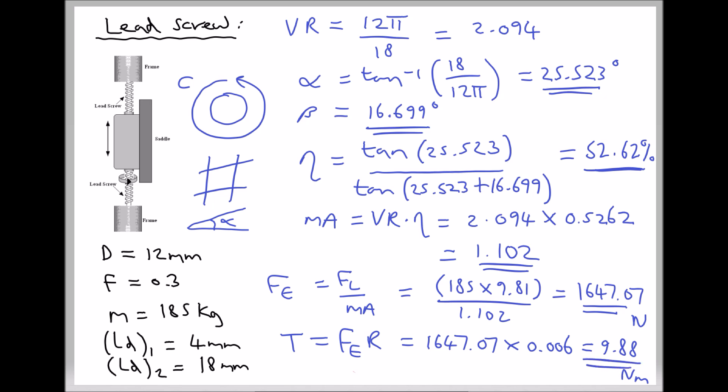Even though our efficiency has more than doubled to 52.62% from 25.30%, the torque requirement of 9.88 N·m is roughly double the previous torque requirement of 4.57 N·m. The important thing here is we're using less energy, but we need to apply a greater torque in order to lift the load. So providing our motor is capable of applying the required torque, we're going to use roughly half the amount of energy in lifting the mass.